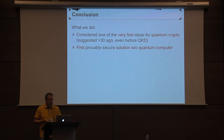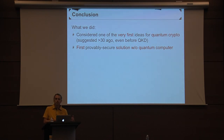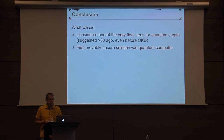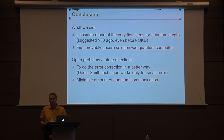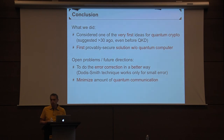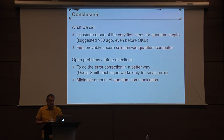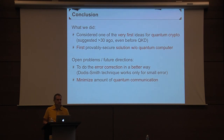In conclusion, we considered one of the very first ideas for quantum cryptography — using quantum mechanics to circumvent classical impossibility results in crypto — an idea suggested more than 30 years ago, even before quantum key distribution was invented. We give the first provably secure solution that doesn't require any quantum computing capabilities. An intriguing open problem is to do error correction in a better way — if done in the straightforward obvious way, this would give a nicer, more natural scheme and allow us to tolerate more noise, since the current techniques by Evgeny and Adam only work for a relatively small amount of noise. Another interesting direction from a practical perspective is to minimize the amount of quantum communication necessary to make the scheme competitive with quantum key distribution.